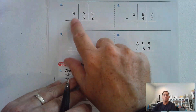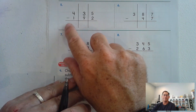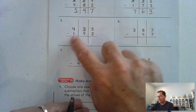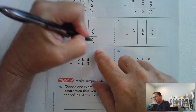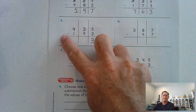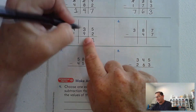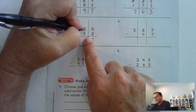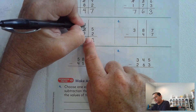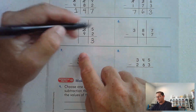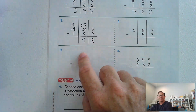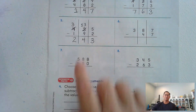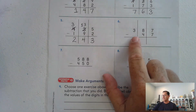Number five: 435 minus 192. 5 minus 2 — yes, we can do that. 3 tens take away 9 tens — we can't, so we're going to take one of the hundreds and trade it for 10 tens. 13 minus 9 is 4, and 300 minus 100 gives us 200. Answer: 243.